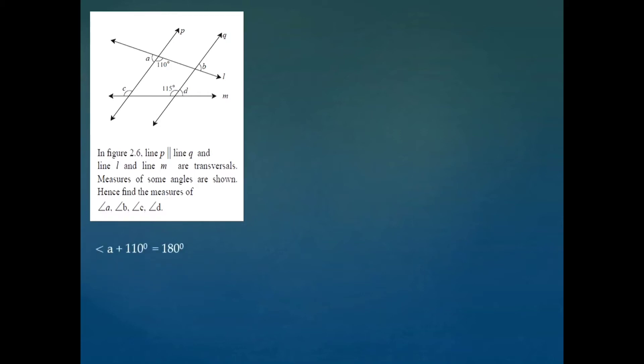Now consider the next question. In the figure, line P is parallel to line Q, and lines L and M are their transversals. Measures of some angles are given in the diagram, and we have to find the measures of angle A, angle B, angle C, and angle D.